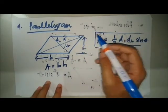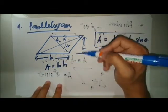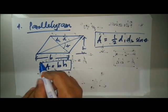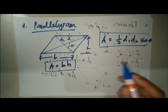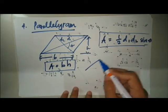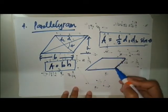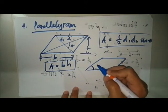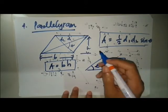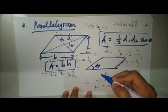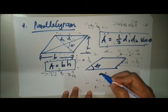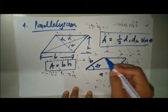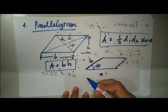If the side and height are given, you use area equals base times height. If the included sides a and b are given along with an angle, you can also compute the area from those values.